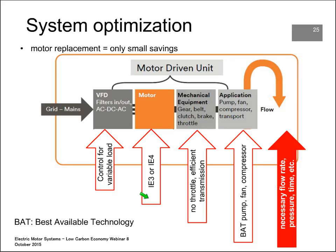Starting with the motor: applying a more efficient motor — IE3 or IE4 — is the first step. Then for control, making sure you use the VFD to meet the demands. For mechanical equipment, make sure that in a pump or fan system there is no throttle in place and that the transmission is efficient. For the application, use the best available technology. The starting point for optimization analysis is determining the actual energy demand and flow rates necessary to meet process demands.